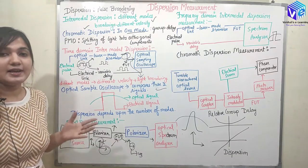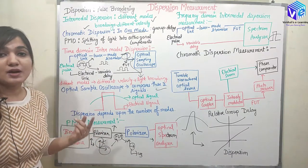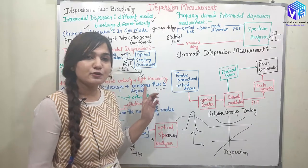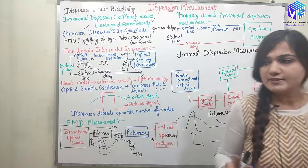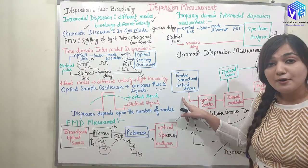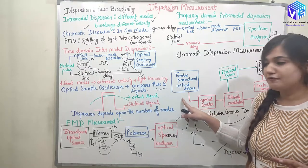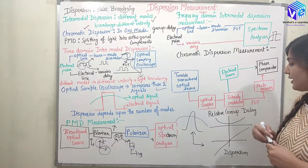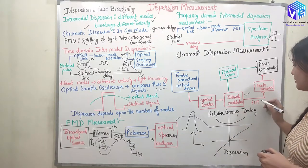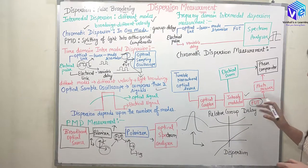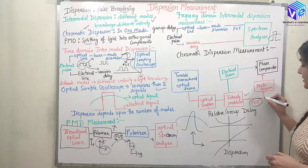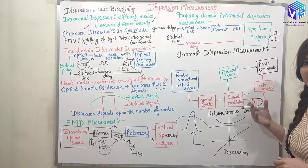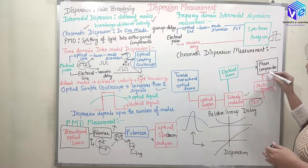Now coming to chromatic dispersion measurement. We must understand that chromatic dispersion occurs in only one mode due to group velocity. Here we take a tunable narrow-band optical source so that it contains only a very narrow frequency band — essentially one frequency component. We send it to an optical coupler, then to an intensity modulator which changes the intensity of the signal, and after that to the fiber under test. After the fiber under test, the light signal is sent to a photo receiver which detects the optical signal and converts it into electrical form.